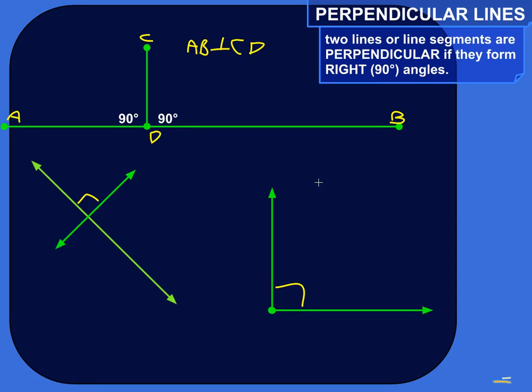So the word perpendicular comes from a Latin word that means vertical. So if you imagine here's the horizon of the earth, you're looking out, and then all of a sudden you see a jet go straight up like that.